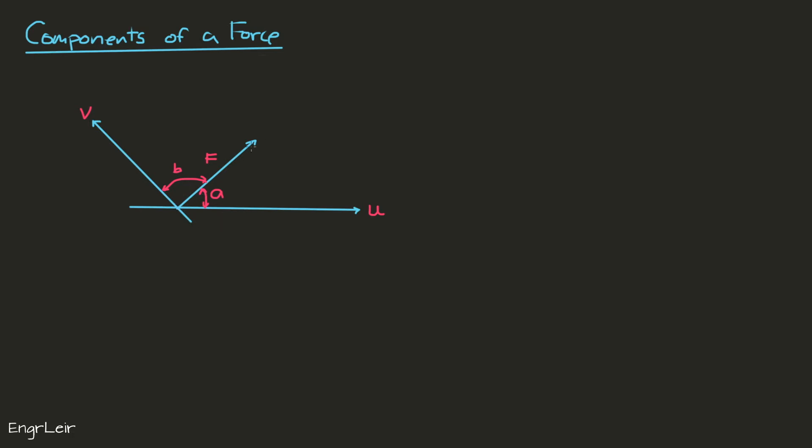So we have f. We make a line parallel to v towards u, so it's something like this. This line is parallel to v and another line. It's important we start on the arrowhead of the force.